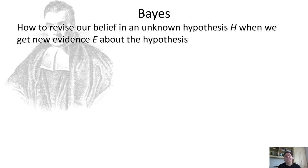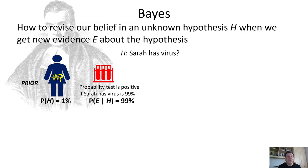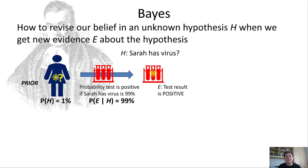Bayes Theorem is all about how to revise a belief in an unknown hypothesis H when we get new evidence E. In our example, the hypothesis H is that Sarah has the virus. We start with a prior belief — the prior probability P(H) — of 1%. The test is 99% certain to give a positive result if Sarah has the disease, so the probability of the evidence given the hypothesis, P(E|H), is 99%. Sarah does test positive, so E is true.